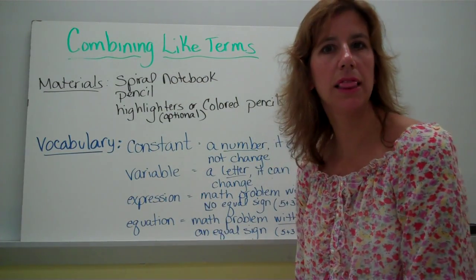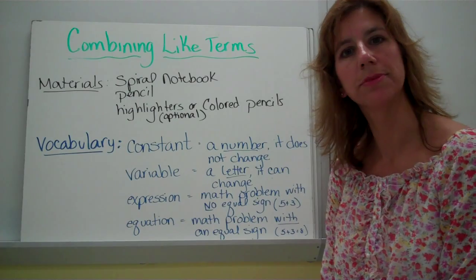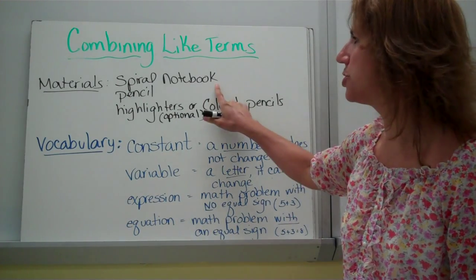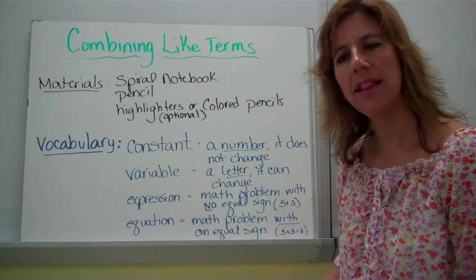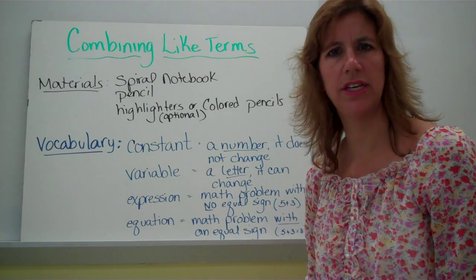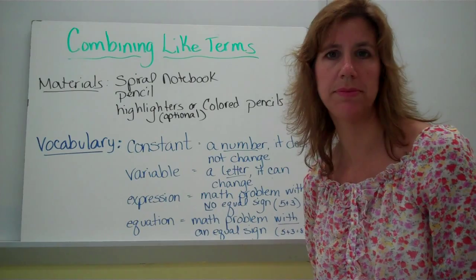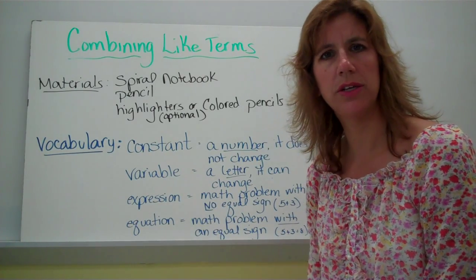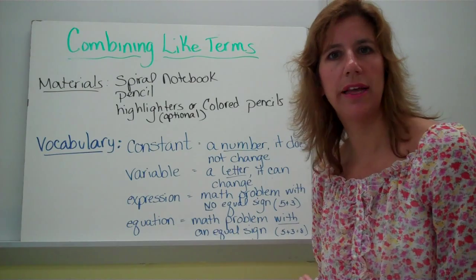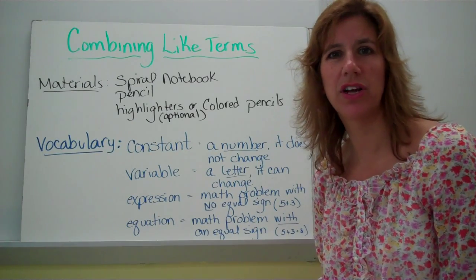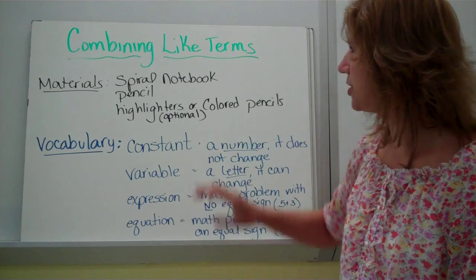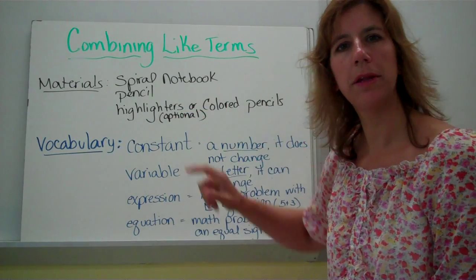This video is all about combining like terms. You want to make sure you have the right materials — you're going to need your spiral notebook and pencil. Highlighters and colored pencils, some people like to use them for this activity, some people prefer just to use shapes. That's totally up to you. If you want to wait and see what it's all about and then decide later on if you want the different colors, you're welcome to do that too. It's really an optional item. But make sure you have your spiral notebook and pencil.